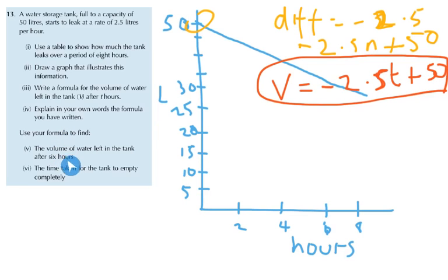Then use your formula to find the volume of water left in the tank after 6 hours. Well, that's my formula. After 6 hours, that means T will be equal to 6. That will be done there, part 5.